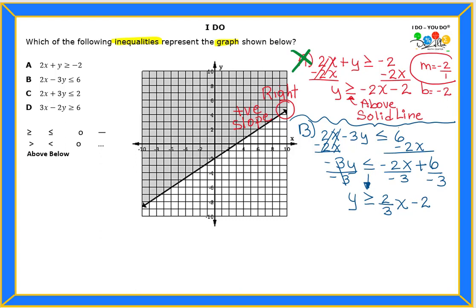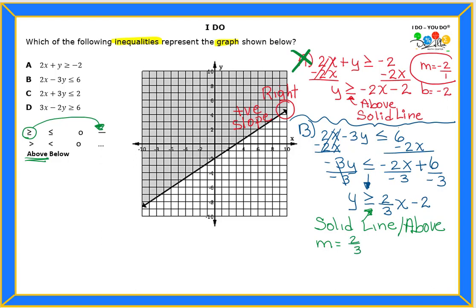So in slope-intercept form, the symbol is now greater than. Looking at the table: greater than corresponds to a solid line, which I see on the graph, and shading above. The slope is 2/3 (positive — which matches the graph), and the y-intercept is -2. Is the y-intercept at -2 on the graph? Yes it is. So letter B is looking like a strong answer.